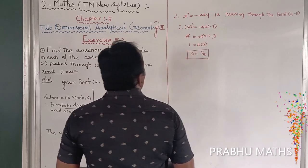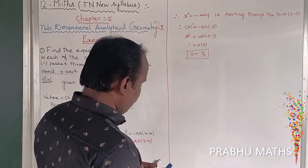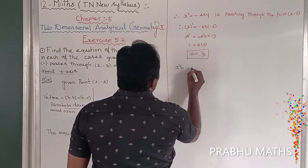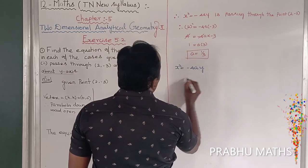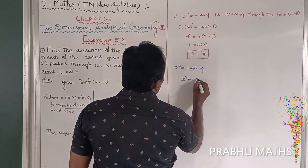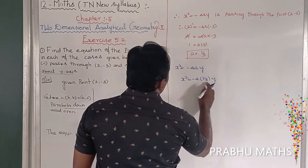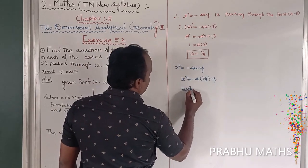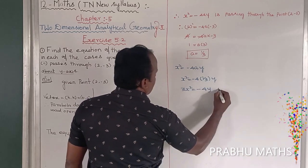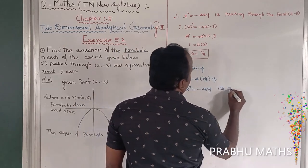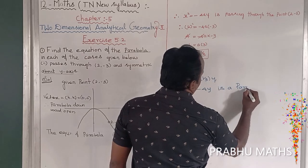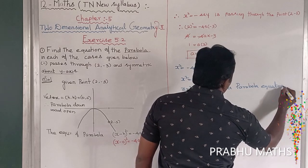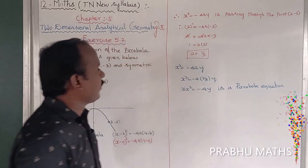So a is equal to 1/3. Now equation number 1 — that is called the parabola equation. x squared is equal to minus 4a into y. Substituting a = 1/3: x squared is equal to minus 4 times 1/3 times y. Multiplying through by 3: 3x squared is equal to minus 4y. That is the parabola equation.